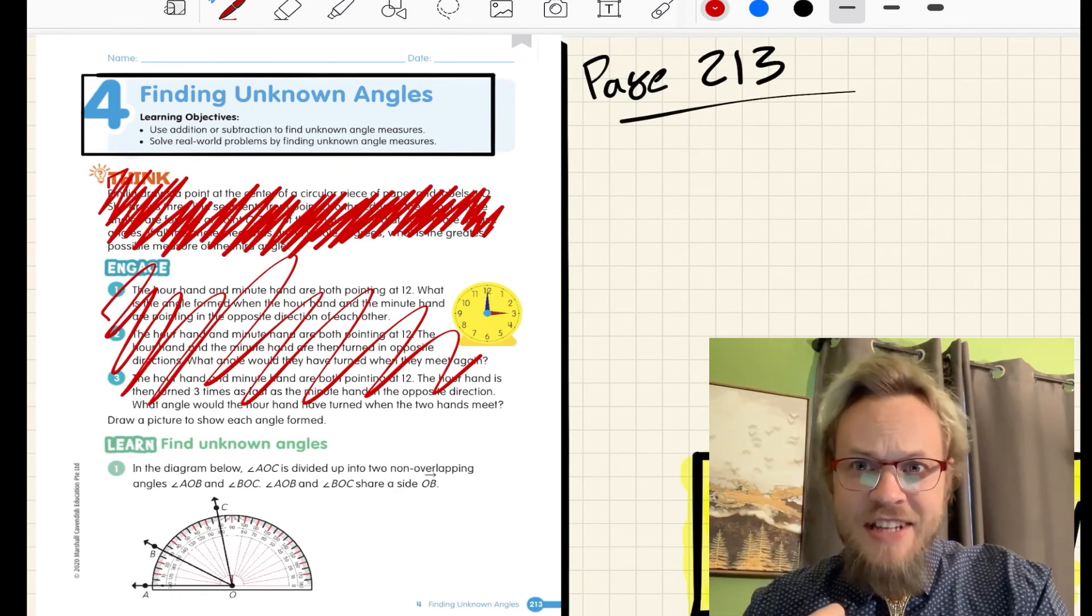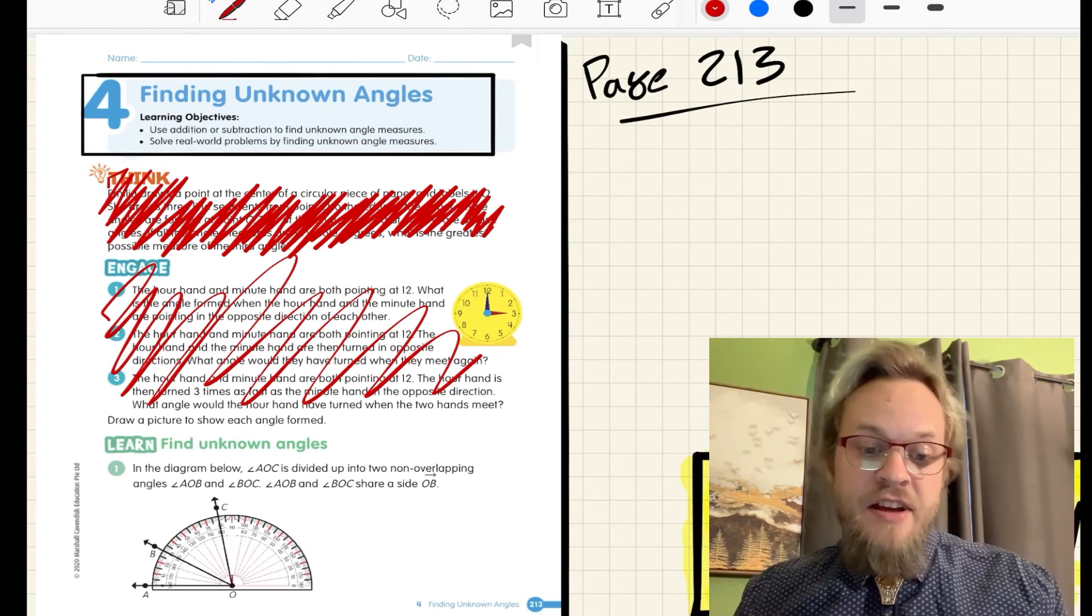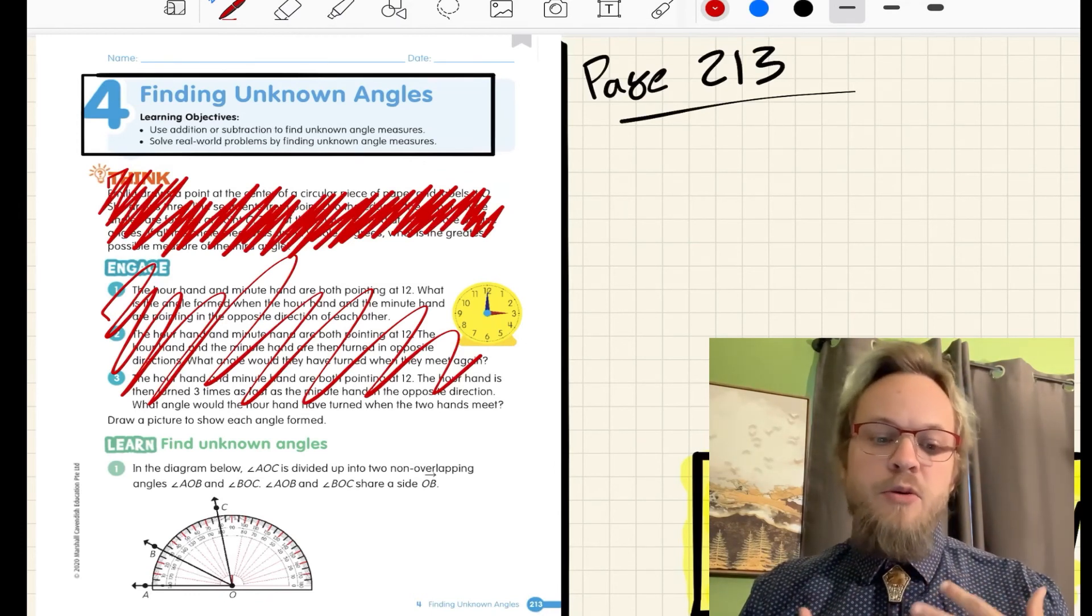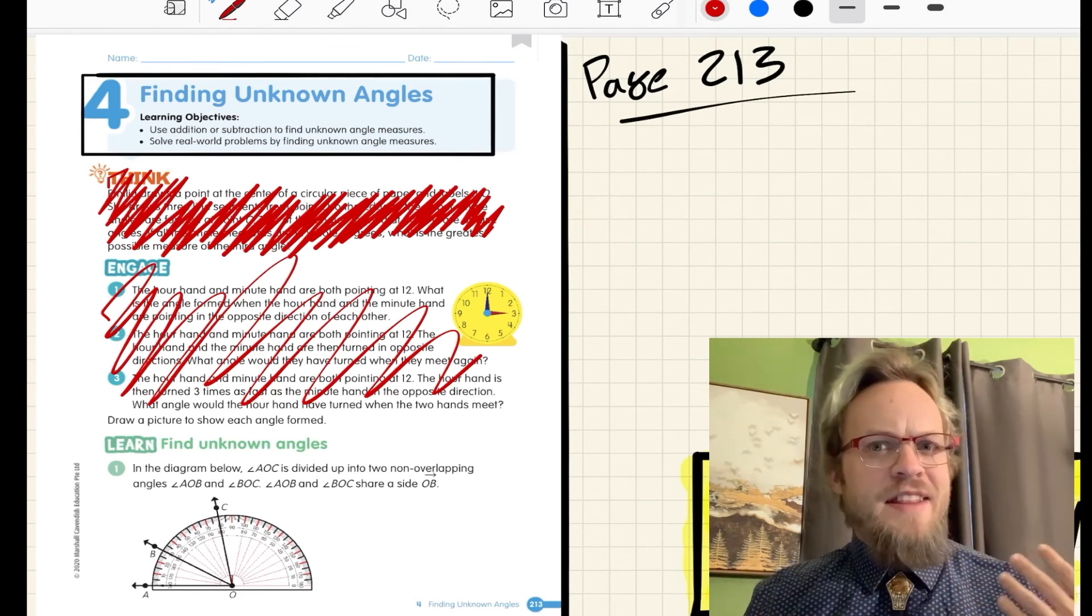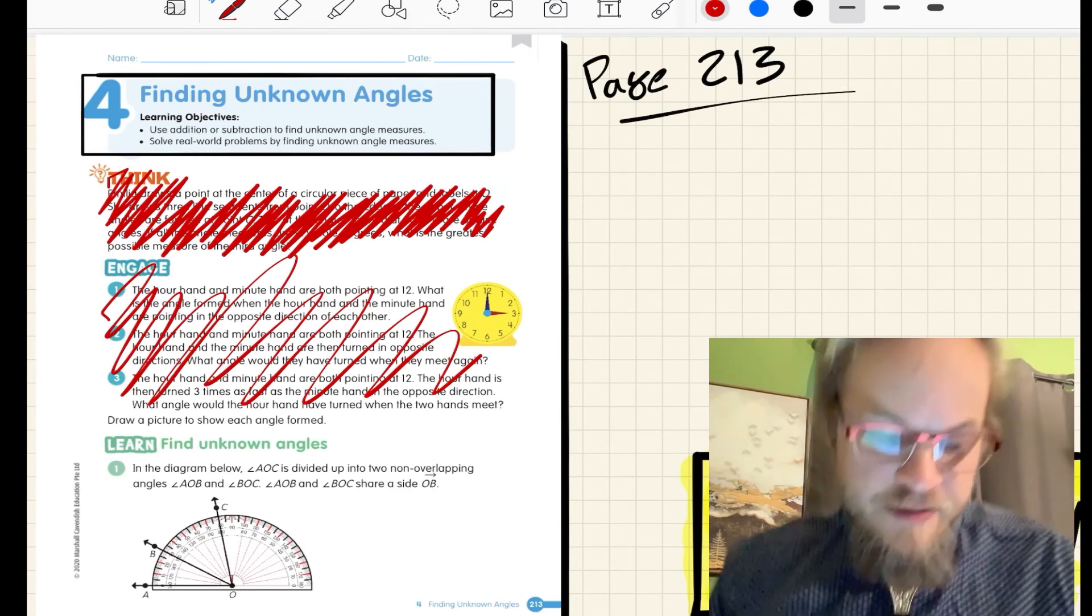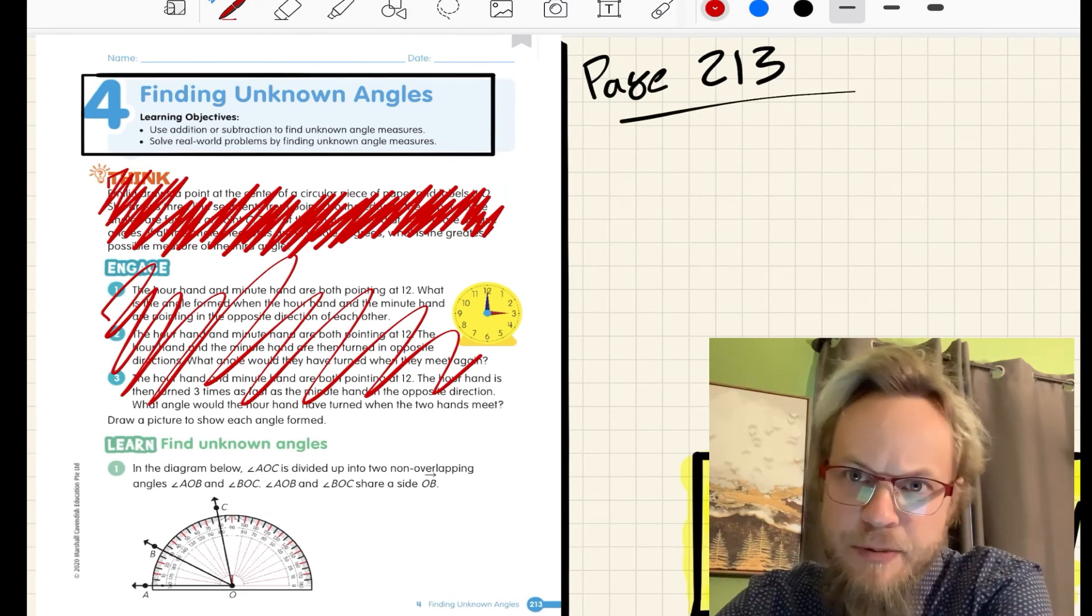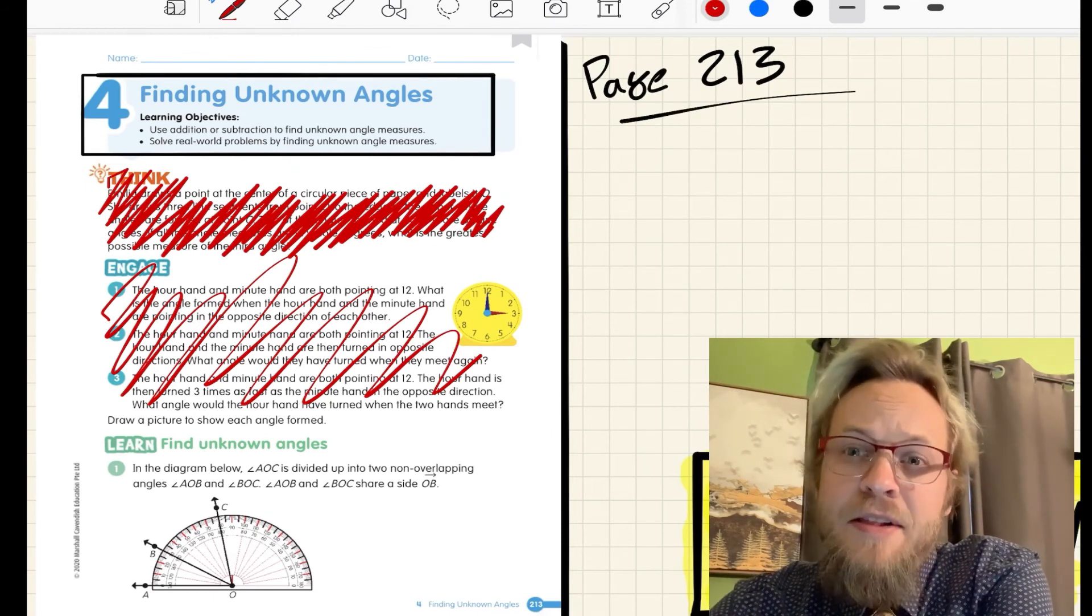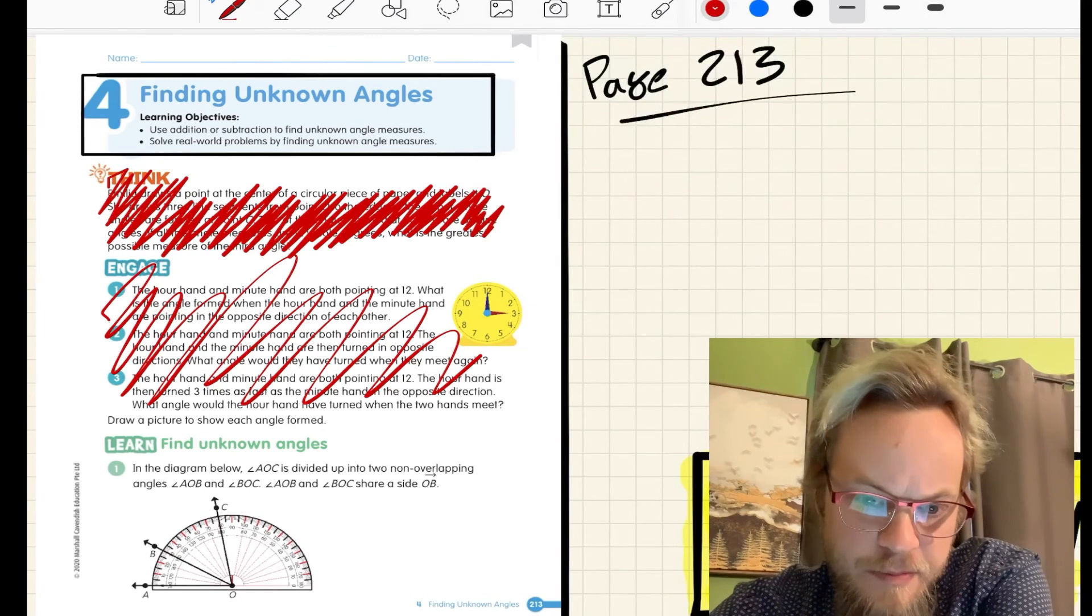We have two learning objectives for today. Objective one, we will use addition or subtraction to find unknown angle measurements, and at the end we'll solve some real-world problems by finding unknown angle measures. We've got a couple word problems at the end. To start us off, I've crossed out the think, I've crossed out the engage. We're starting right at the learn here at page 213.